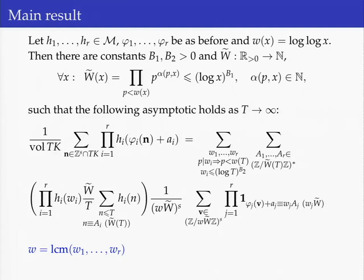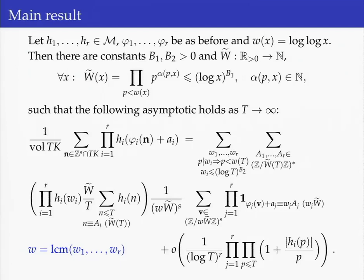What we have is a fairly short sum of products of mean values of the functions in arithmetic progressions. These products must be weighted with a weighted count of the number of solutions to a system of congruence conditions — counting how often the system of forms phi_i plus a_i takes the correct residue class w_i times a_i modulo the respective modulus w_i times W-tilde. That is the correct weight for this product of mean values in arithmetic progressions. This is the main term of our result.